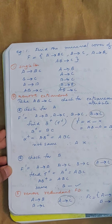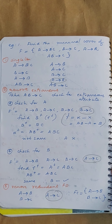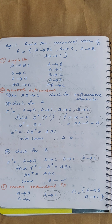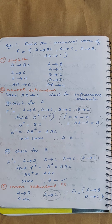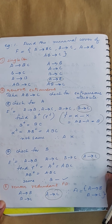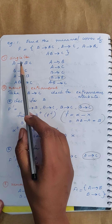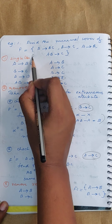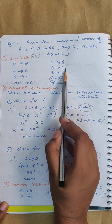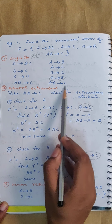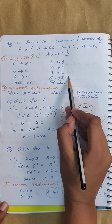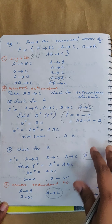Now here is a full worked-out example to find the minimal cover for a set of functional dependencies. The set given is: A→BC, B→C, A→B, and AB→C. The first step is to decompose — make the RHS singleton. Split A→BC into A→B and A→C. Then you have B→C, A→B, and AB→C. Here you can already see that A→B is repeated, so it is a redundant functional dependency and can be removed right away.